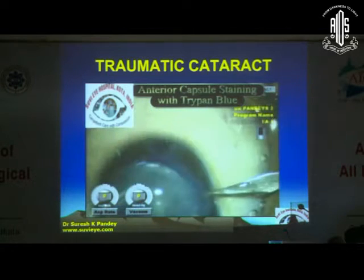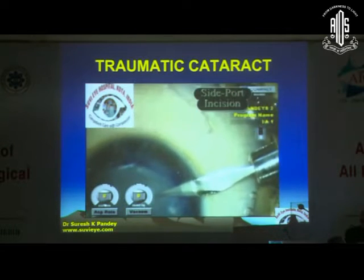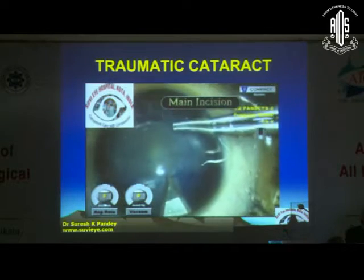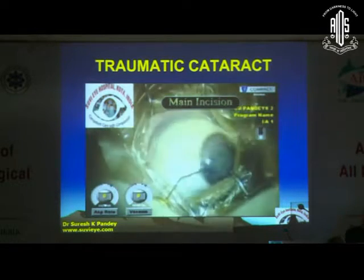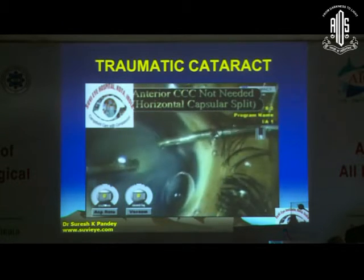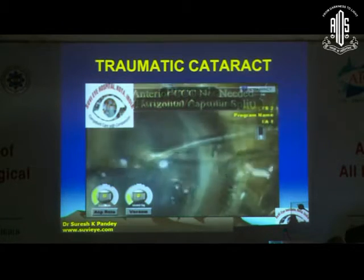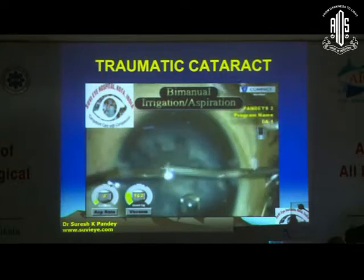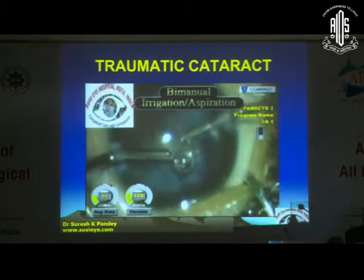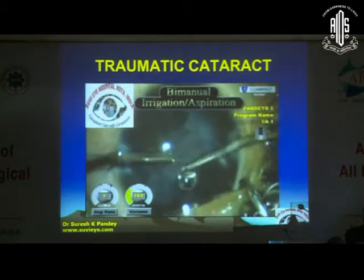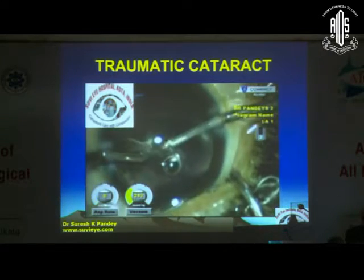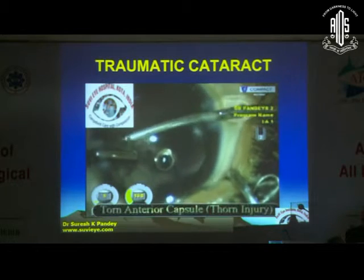This is the second case of traumatic cataract with a torn anterior capsule. This was a child who had an injury with a thin stick, so there was a horizontal split of the capsule. The cataract was soft, so bimanual irrigation aspiration was done to clean up the cortex, and after doing bimanual irrigation aspiration, the cortical cleanup was done.